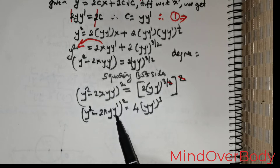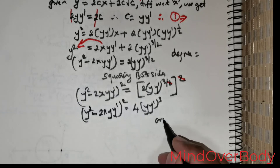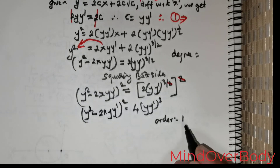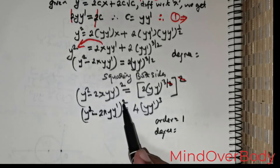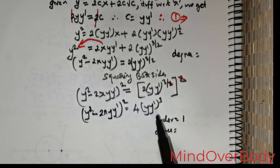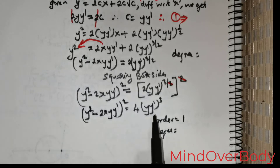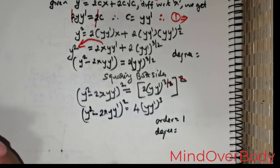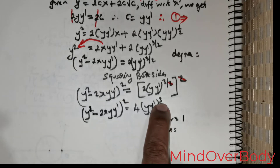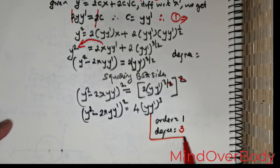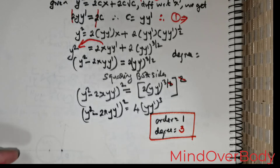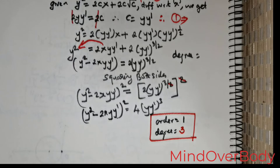The order is 1 since y' is the highest differential present. For the degree, the highest power of y' is 3 (from the (y·y')³ term on the right). Therefore the degree is 3.